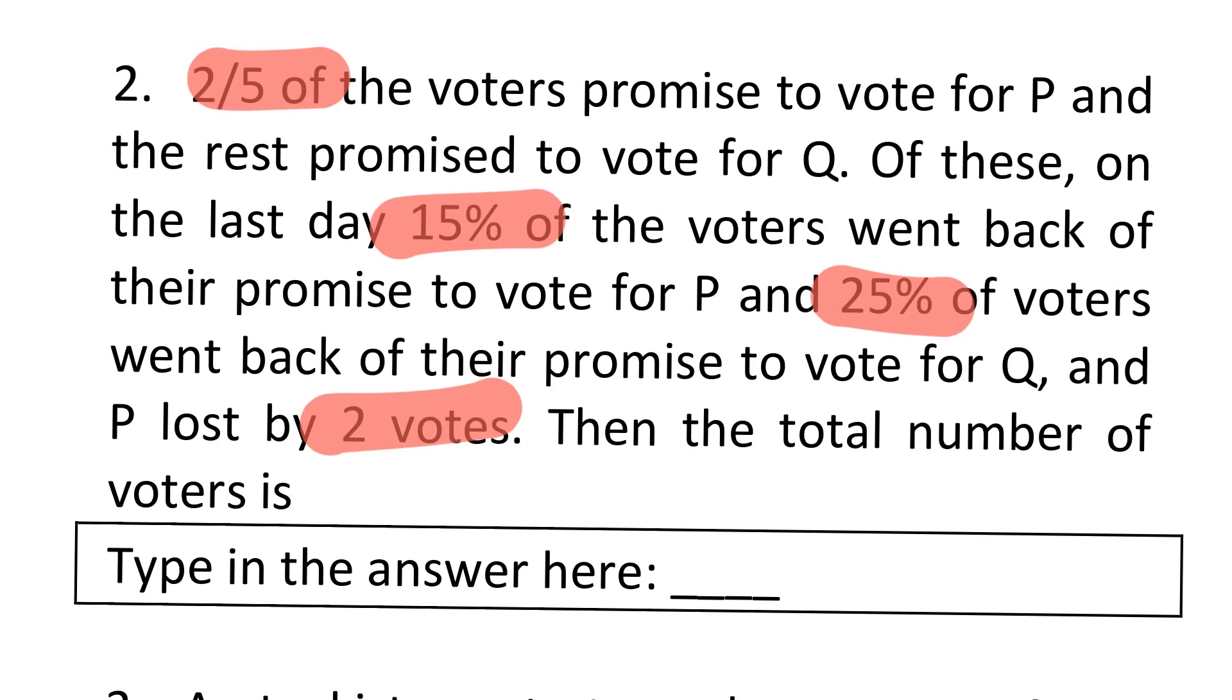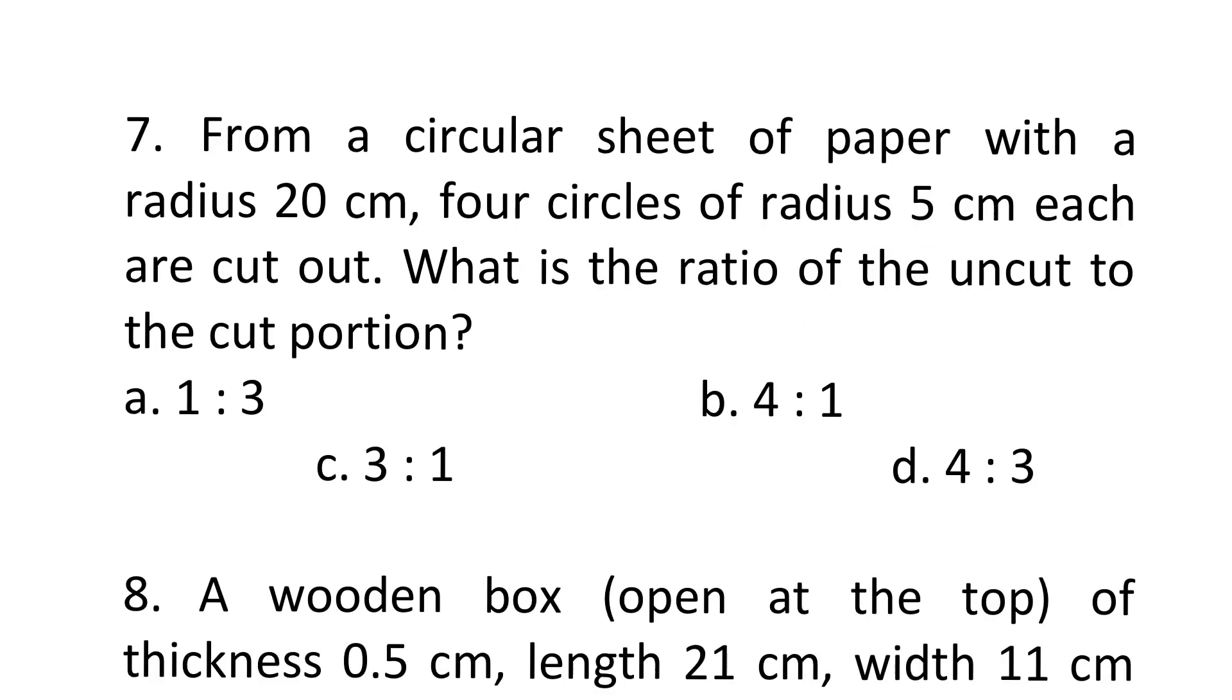At number four is shortcuts. Let's look at question number seven. You can pause the video and try to solve this yourself. From a circle of radius 20, four small circles of size 5 are cut. Find the ratio of uncut to cut. Now I can use the formula pi r square to solve this question - uncut means big circle minus four small circles, divide by cut which is four circles.